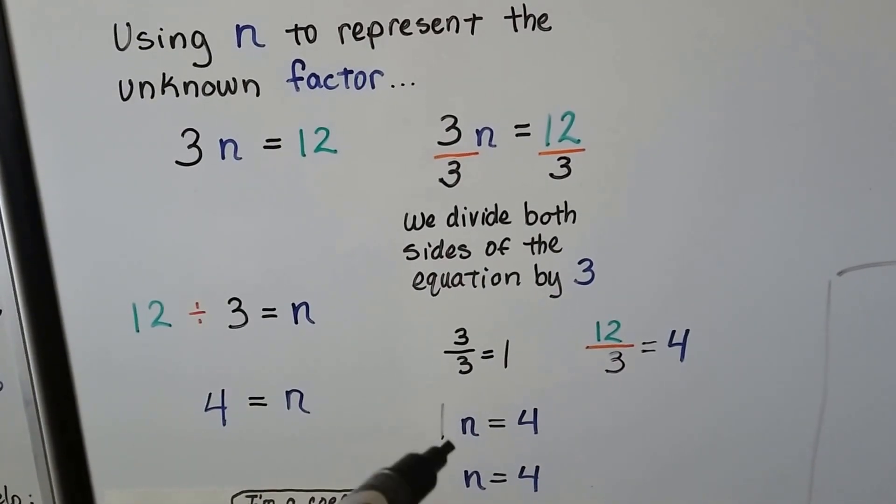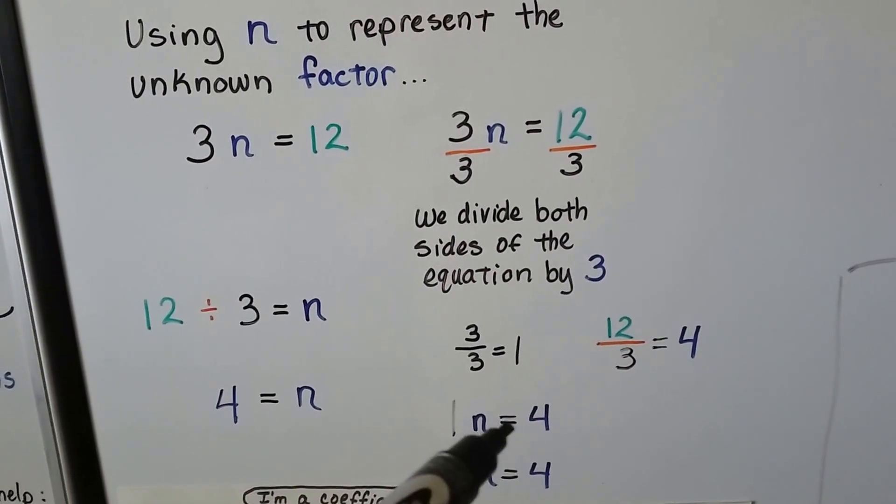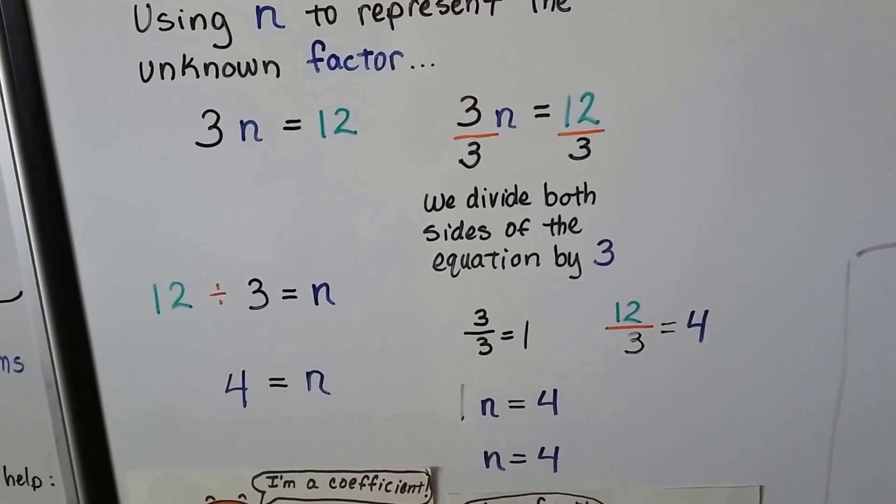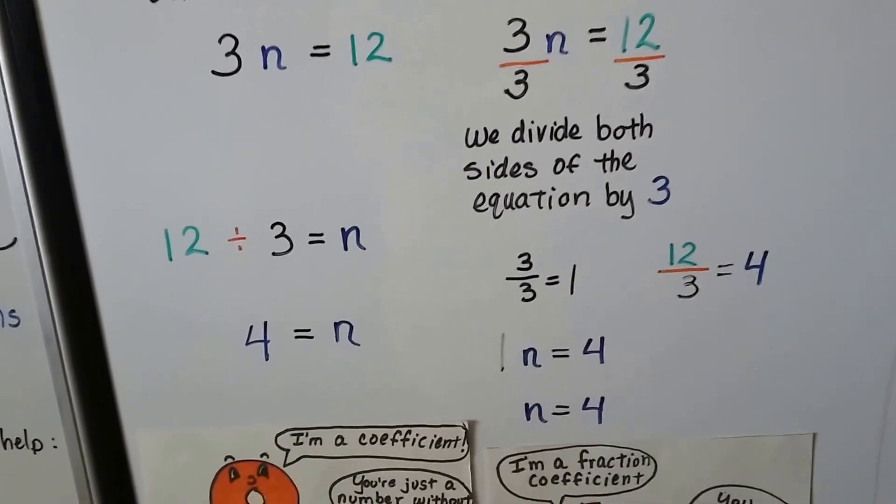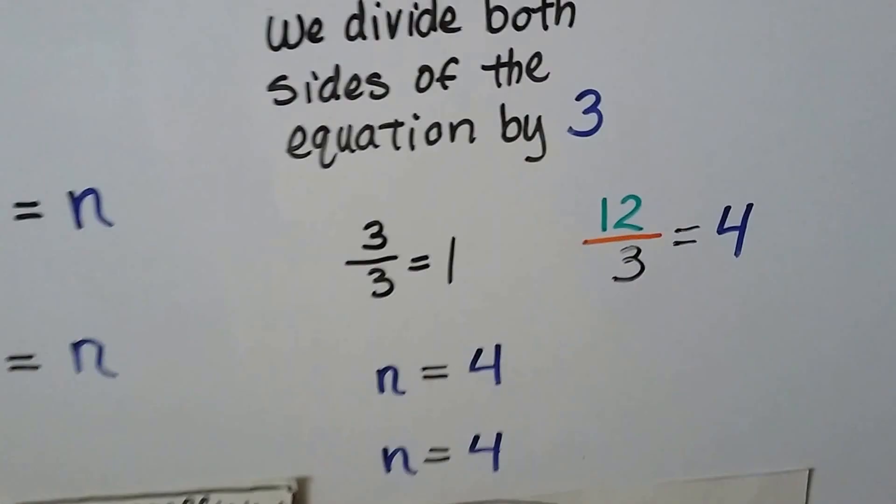So that means we have 1n, 1n, and it's going to equal 4. 12 thirds simplifies to 4.